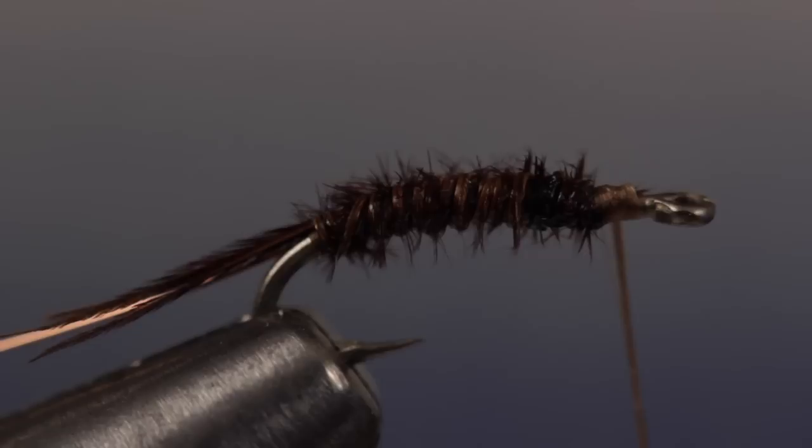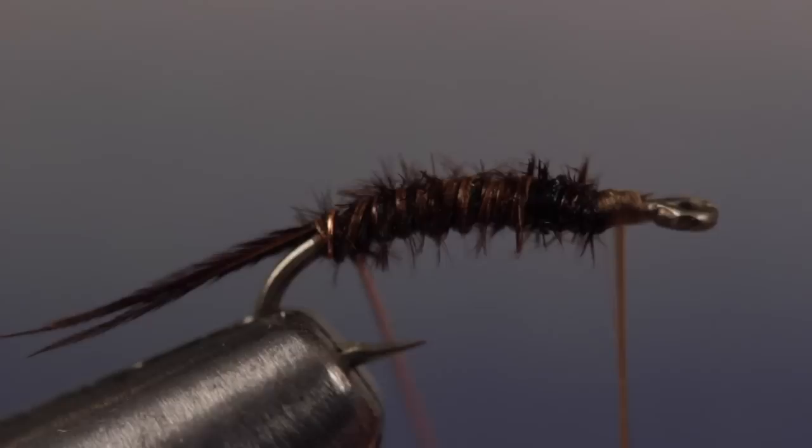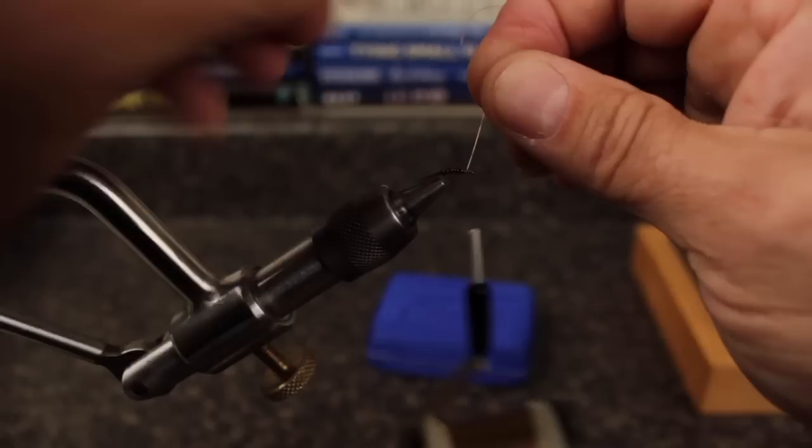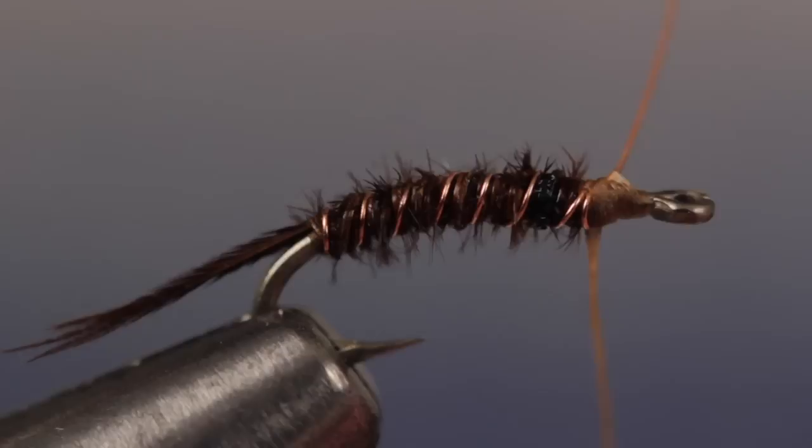Get hold of the copper wire and pull it under the hook shank so it doesn't jostle the tail. Start taking wraps over top of the pheasant tail. On flies this small, I believe counter wraps are more trouble than they're worth, but feel free to use them if you like. When you reach the front of the pheasant tail body, secure the wire with three tight turns of tying thread. You can then raise your bobbin up to brace the hook while you helicopter the wire and break it off close.